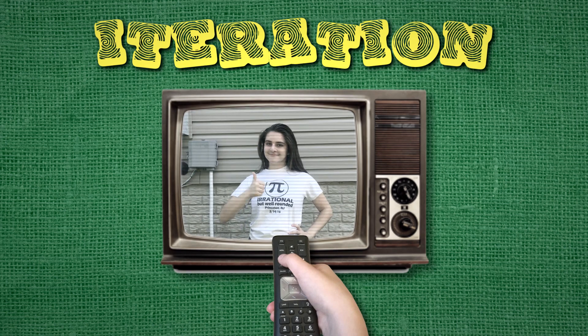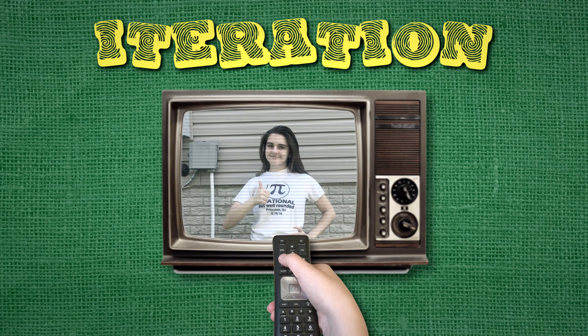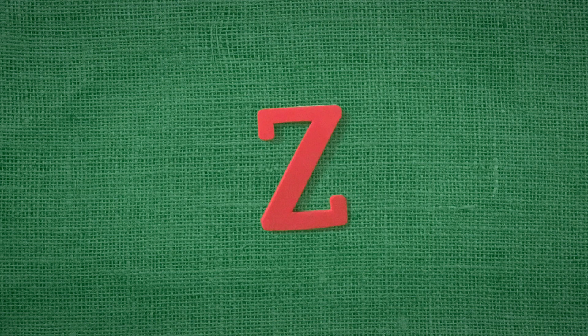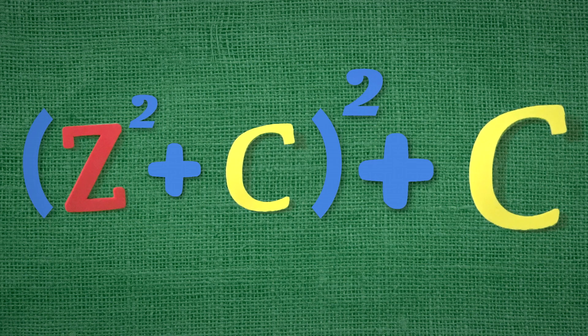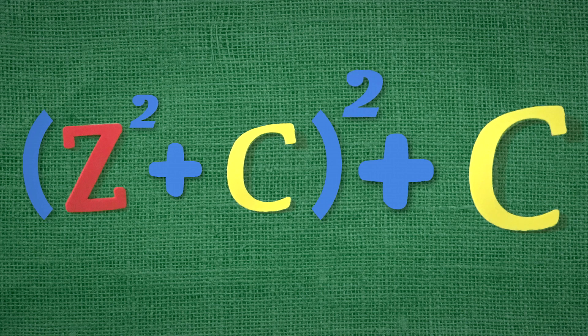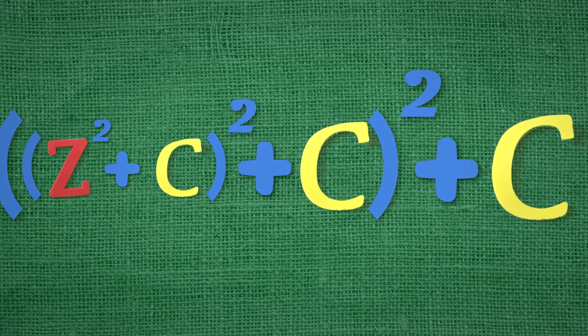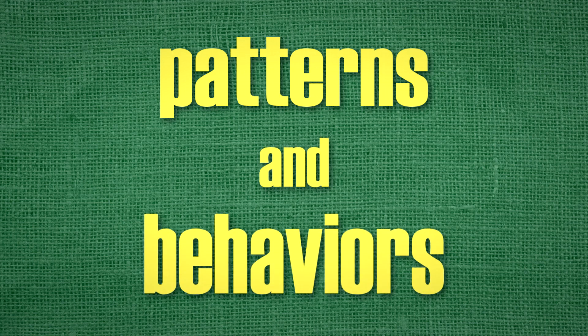To iterate is to repeat a process over and over again. In the case of the Mandelbrot set, we are taking a number z, squaring it, and adding another number c. The answer we get from that is our new starting z value, and we repeat the process all over again, and continue to repeat it in order to identify patterns or certain behaviors.